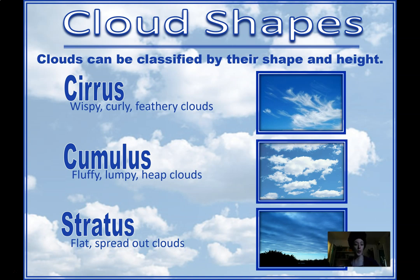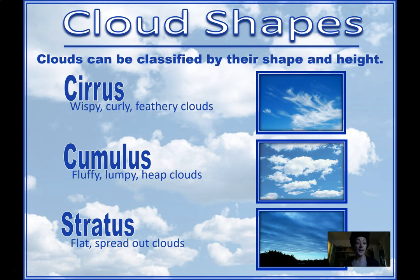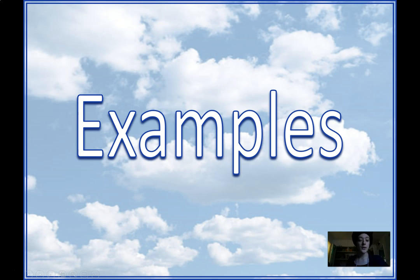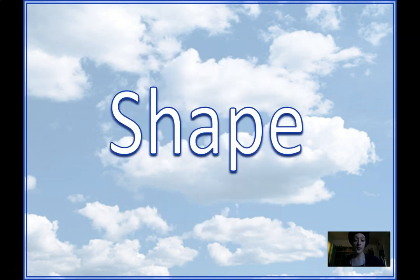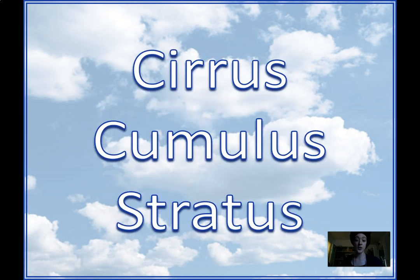Stratus clouds are the low blanket, spread-out clouds. Then we have cumulus clouds — my favorite type, and maybe yours too — right in the middle. Cumulus clouds are your classic big puffy, fluffy, bumpy clouds — like the Toy Story cloud — and they are usually the ones that get big and turn into thunderclouds. So cirrus, cumulus, and stratus are the three main shapes of clouds. In the names of different cloud types, there are two parts: the height comes first as the prefix, then the shape of the cloud is the next part of the word.